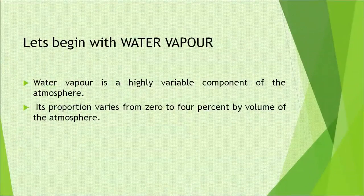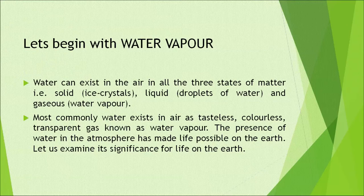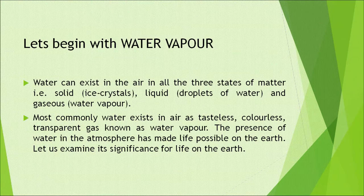Let's begin with water vapour. Water vapour is a highly variable component of the atmosphere. Its proportion varies from 0 to 4% by volume of the atmosphere. Water can exist in the air in all three states of matter — solid, that is ice crystals; liquid, that is droplets of water; and gaseous, that is water vapour. Most commonly, water exists in air as a tasteless, colourless, transparent gas known as water vapour.